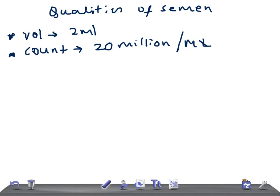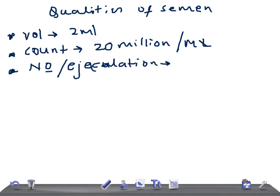Now the number of sperms per ejaculation must be at least 40 million. Note that the count and the number of sperms are different: the count is 20 million per ml, while the total number of sperms per ejaculation must be at least 40 million.